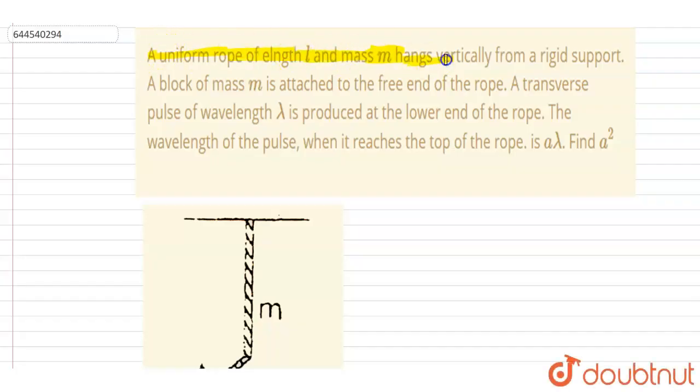length L and mass m hangs vertically from a rigid support. A block of mass m is attached to the free end of the rope. A transverse wave of wavelength λ is produced at the lower end. The wavelength of the pulse when it reaches the top of the rope is?